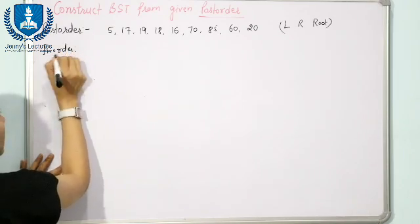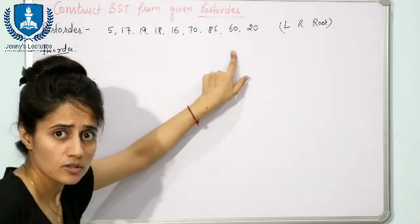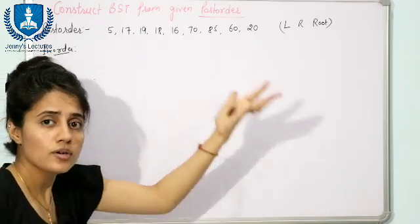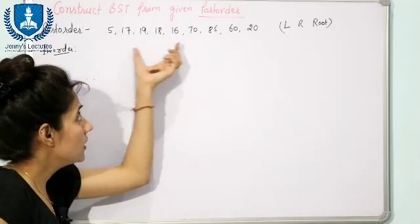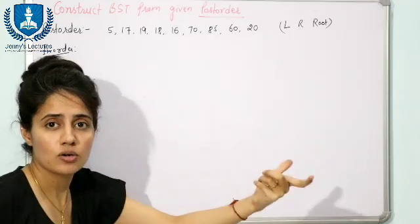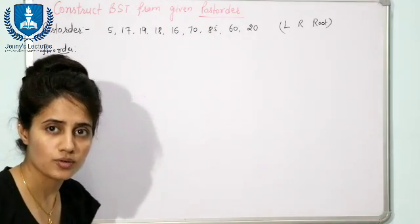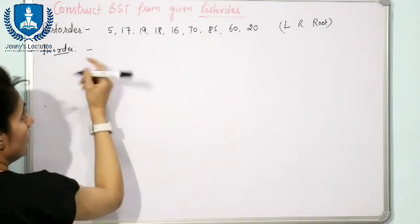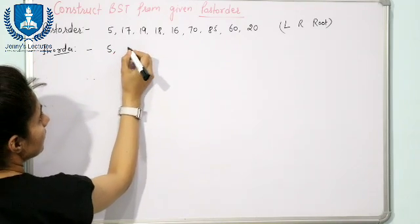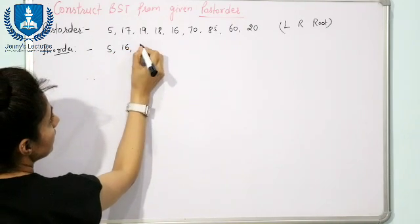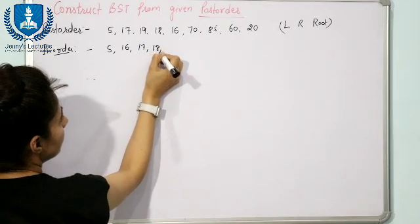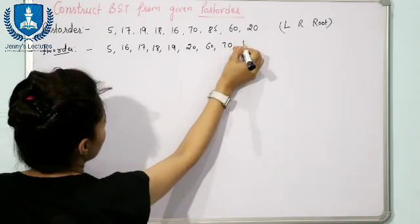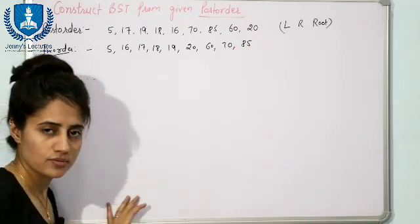Since post-order traversal is given, the elements in the BST are these. The inorder traversal is simply these elements arranged in ascending order — that is the rule. So the inorder traversal is: 5, 16, 17, 18, 19, 20, 60, 70, and 85.